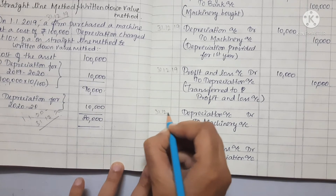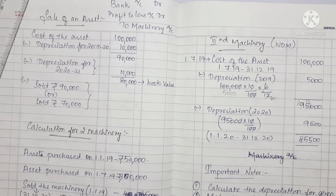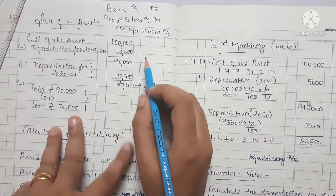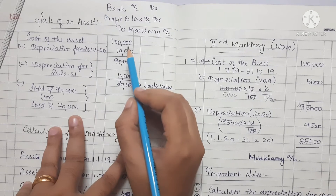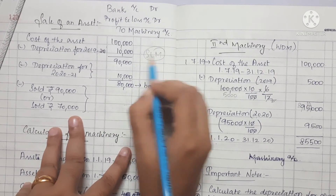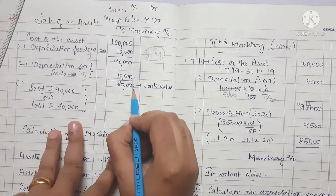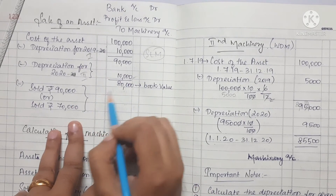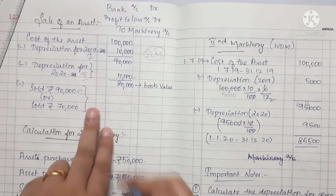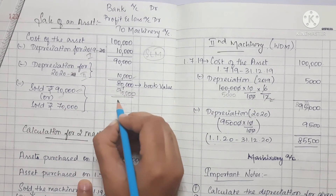The date 31-12-2020 is the second year depreciation. The next topic is the sale of an asset. We look at the calculation and the journal entry. The cost is Rs. 1 lakh. First year depreciation is Rs. 10,000 under Straight Line Method. Second year depreciation is also Rs. 10,000. So after two years, the book value is Rs. 80,000. In the third year, there is a sale, and we record the book value.